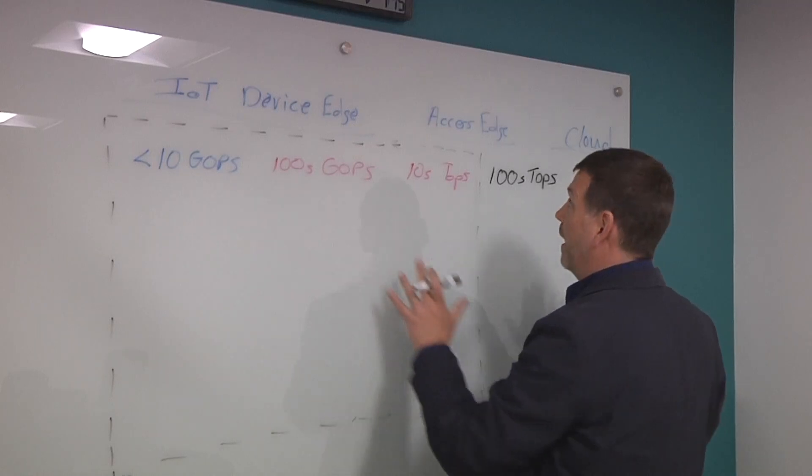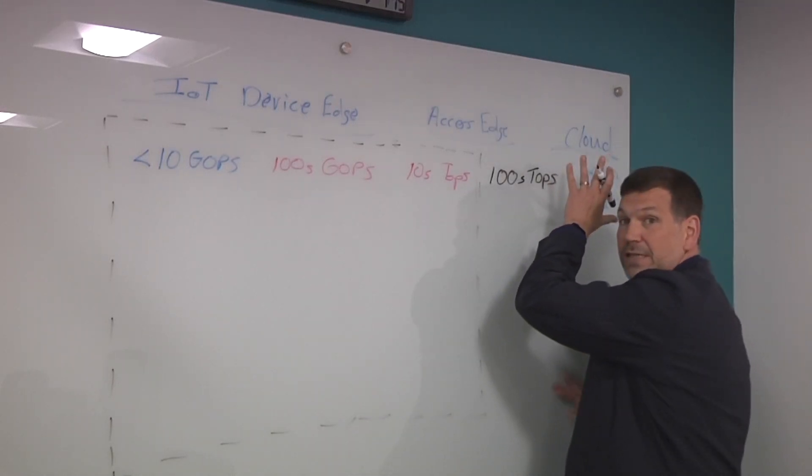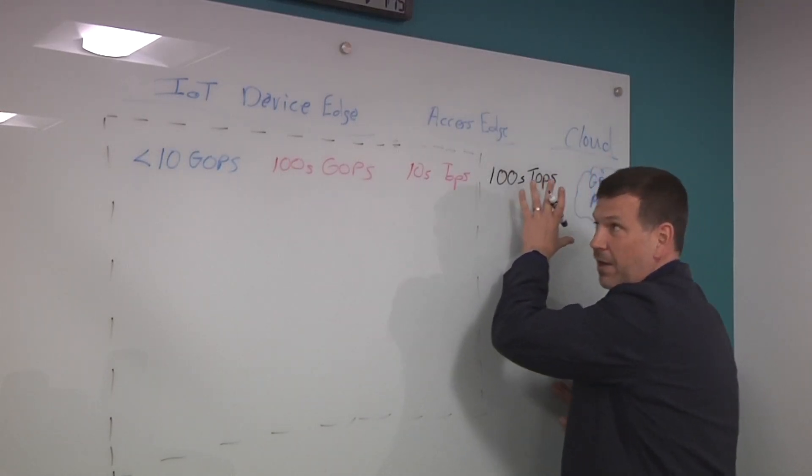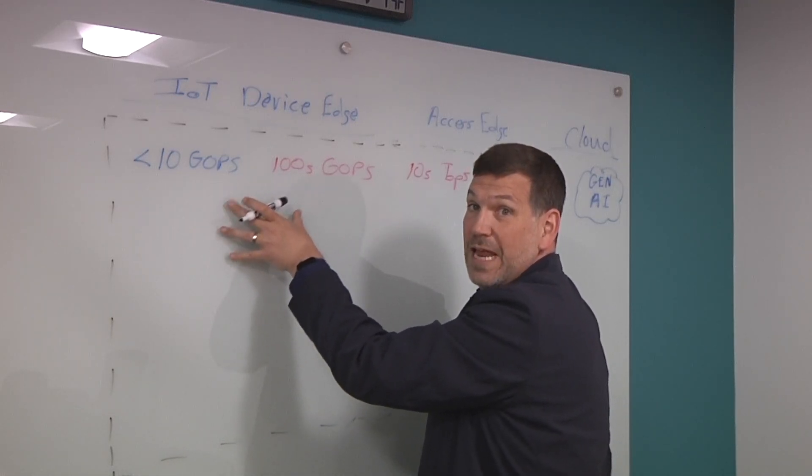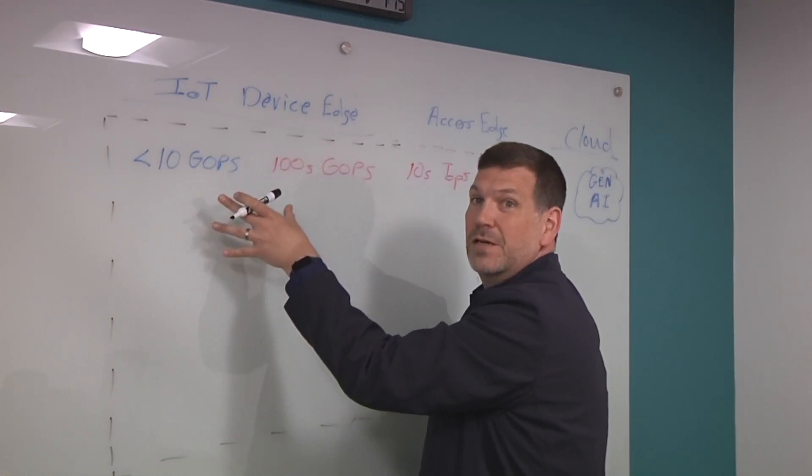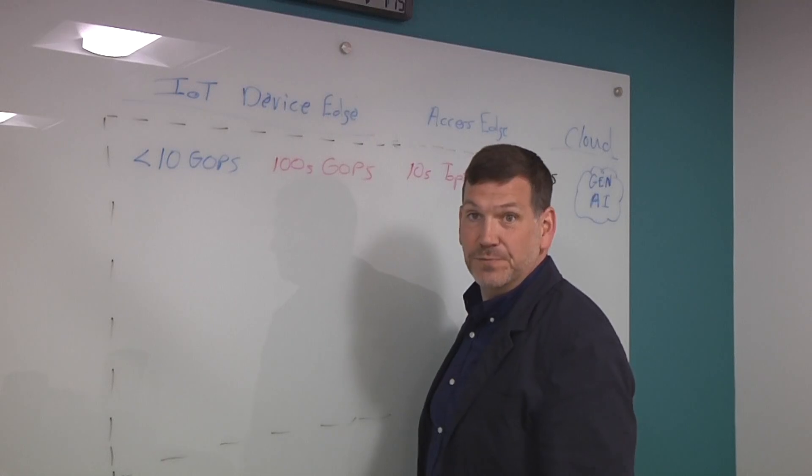And today, we're going to talk about how do we take some of those technologies that you have in the cloud and how can we pull that down into the right price and performance point to enable a similar experience but on a device at the edge. So how do you do that? You really want to keep this within a fairly tight power window, right?